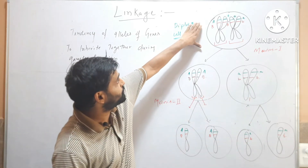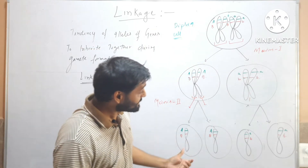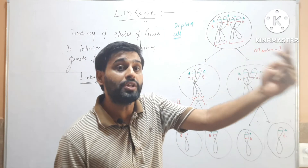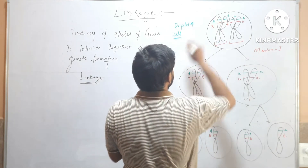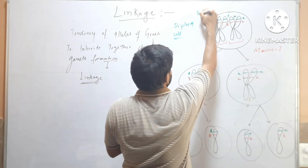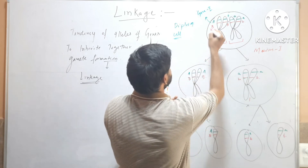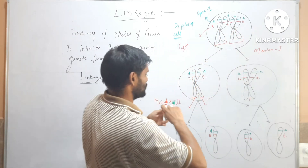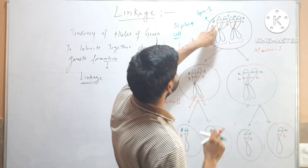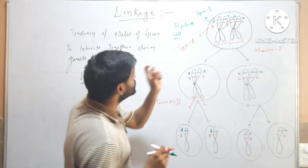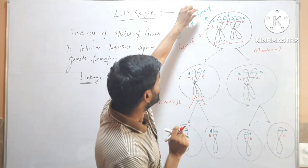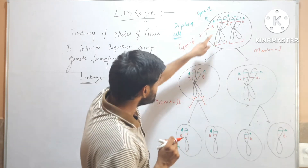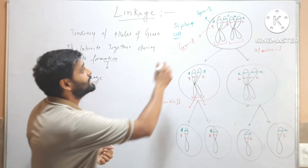Now in these four gametes, you can see that two alleles of two different genes are inherited together. Capital A is from gene one and capital B is from gene two. Small a and small b are also from gene one and gene two respectively. You can see that the allele capital A and allele capital B are inherited together from the parent cell to the gamete.